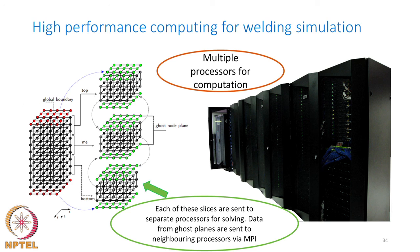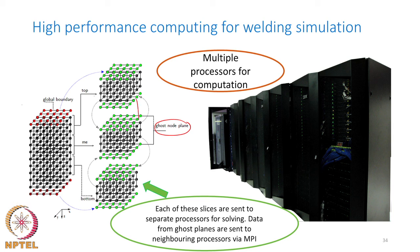When splitting a 3D domain across processors, neighboring nodes on adjacent processors are needed. Ghost node planes — replications of boundary data — are maintained on each processor and kept synchronized by MPI. This domain decomposition approach allows welding simulations to run efficiently across multiple processors.